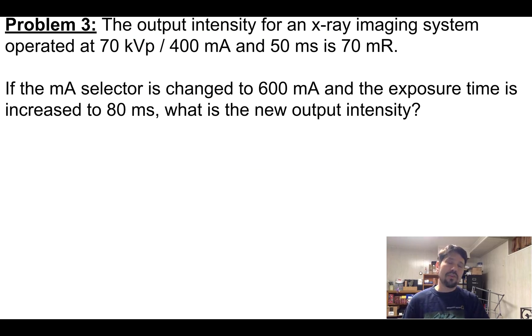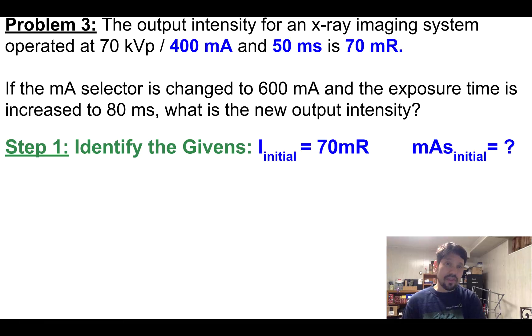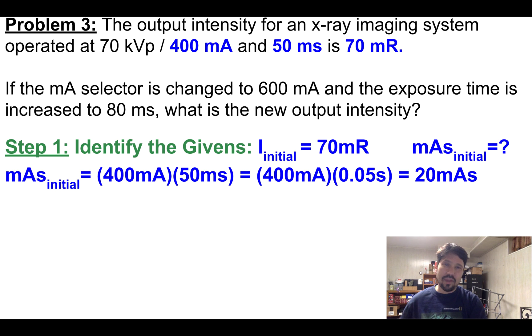A third problem would make you multiply out the mAs. So I'd say the output intensity is at 70 kVp for 400 mA at 50 milliseconds to 70 mR. If the mA selector's changed to the 600 mA station and the exposure time is increased to 80 ms, what's the new intensity? So what are our givens? We've got initial intensity, and we have initial mAs, but not easily. We'll have to calculate it.